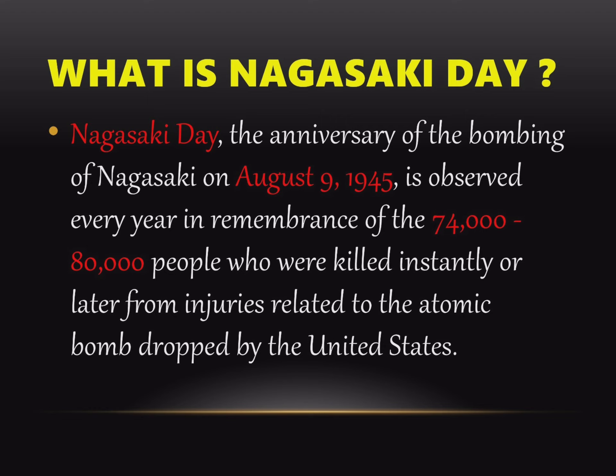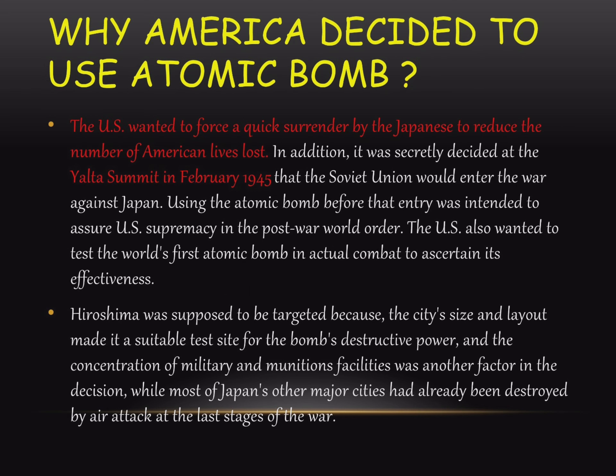Why did America decide to use the atomic bomb? The US wanted to force a quick surrender by the Japanese to reduce the number of American lives lost. In addition, it was secretly decided at the Yalta Summit in February 1945 that the Soviet Union would enter the war against Japan.